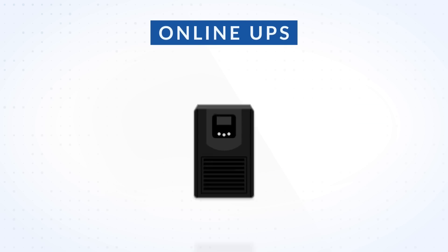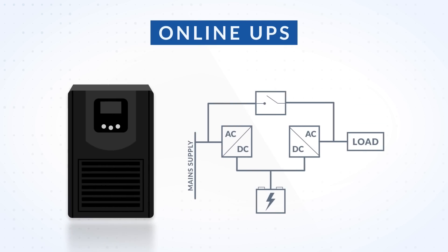The Online UPS always provides power to the load via double conversion. During proper operation, the power from the mains is converted from AC to DC. The DC voltage charges the battery and is converted back to AC through the inverter. This means that during a blackout, the power instantaneously goes to the load with almost no transfer time.